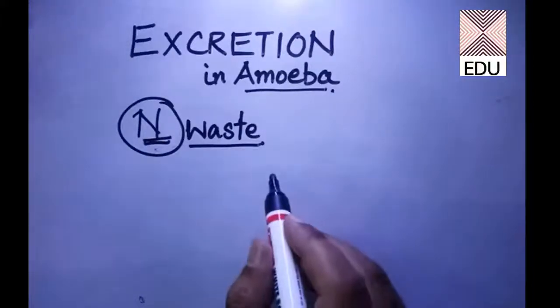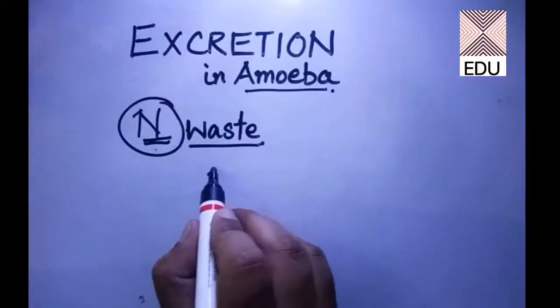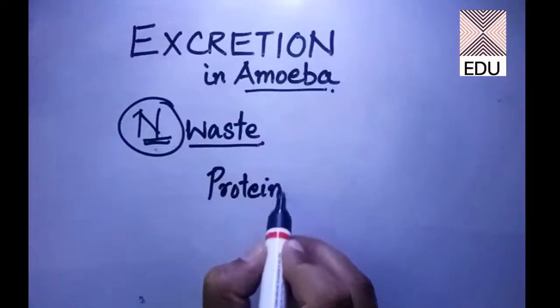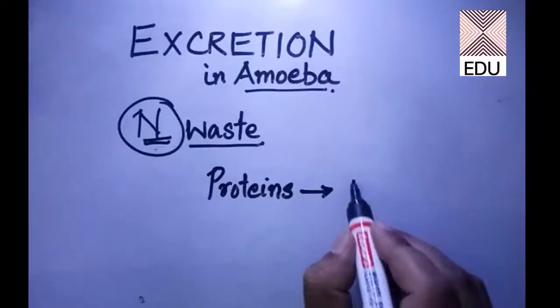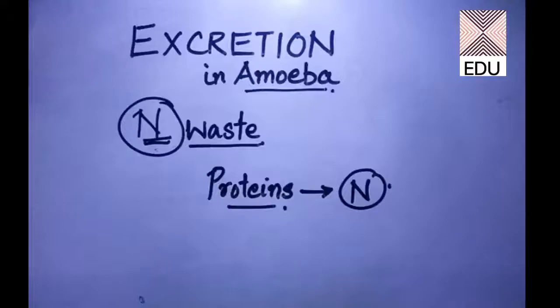Amoeba processes proteins, so the digestion of proteins will give rise to nitrogen because proteins have nitrogen in them. The digestion of proteins will give rise to nitrogen.